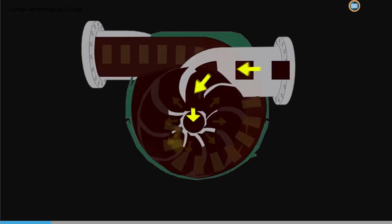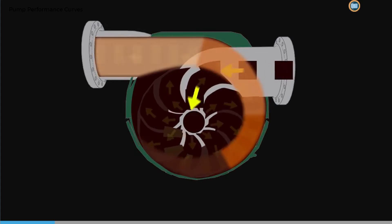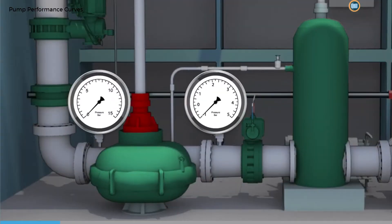As the area of the volute increases, so does the pressure of the crude, which results in the crude leaving the pump with increased pressure.